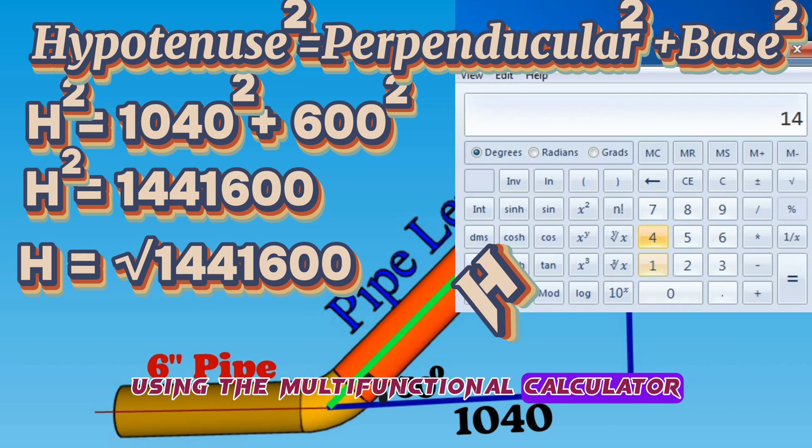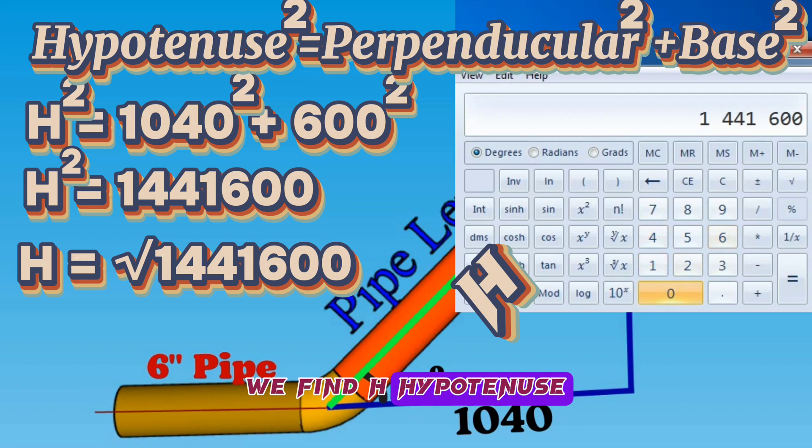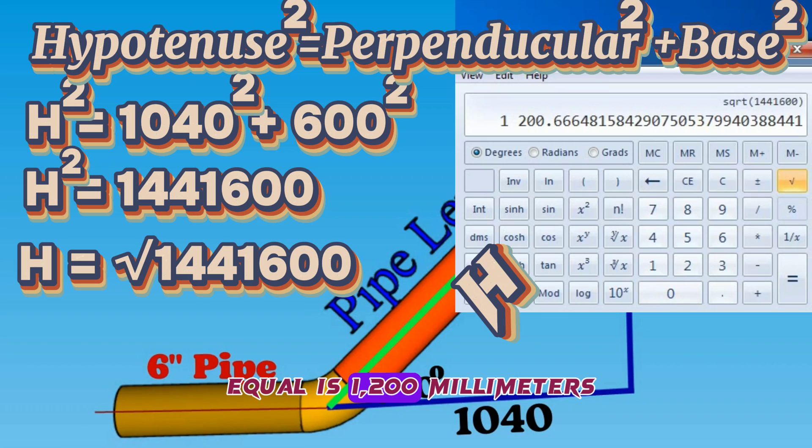Using the multifunctional calculator, we find H hypotenuse equals 1200 millimeters approximately.